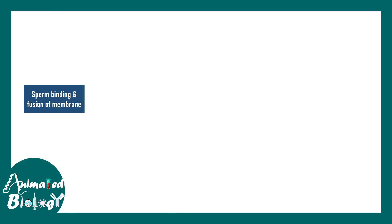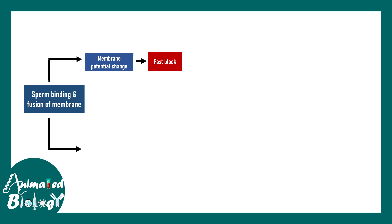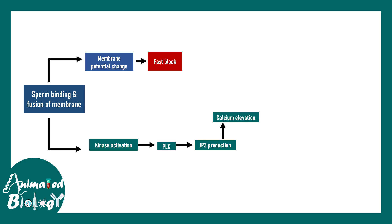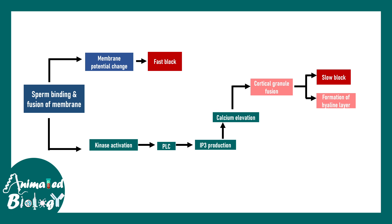To summarize with a flowchart: sperm binding and fusion with the oocyte membrane triggers membrane potential change, causing the fast block of polyspermy. Kinase activation leads to phospholipase C-mediated generation of IP3, elevating cytosolic calcium. Calcium triggers cortical granule fusion causing the slow block, and also promotes hyaline layer formation — creating an impermeable barrier that makes it nearly impossible for a second sperm to enter.